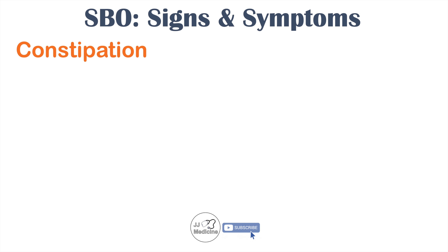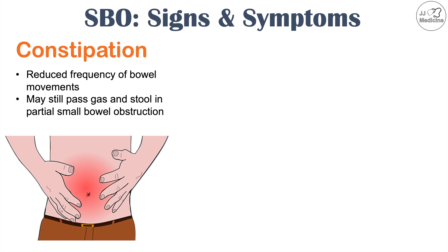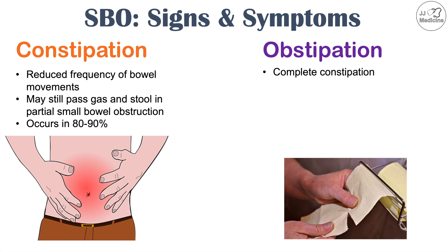Other important symptoms include constipation, meaning reduced frequency of bowel movements. If you have a partial or complete blockage of your gastrointestinal tract, things won't move the way they should. You may still pass gas and stool in a partial small bowel obstruction, but in a reduced amount. Constipation is very common, occurring in 80 to 90% of patients. A more severe form is called obstipation — complete constipation — where there is cessation of passing gas and bowel movements entirely, due to complete occlusion.